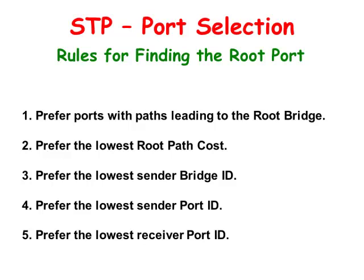After a switch has chosen its root port, it will block any other port that is receiving superior BPDUs from the root switch if the directly connected switch has a lower bridge ID, to prevent a switching loop from forming. Any ports left that are receiving BPDUs will be made into designated ports. Any ports that do not receive any BPDUs will be edge ports for end node devices.